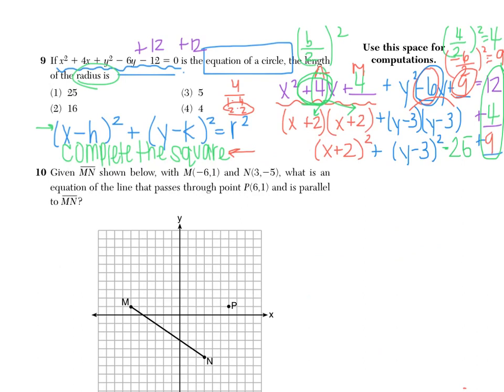So now because they're asking me for the radius, I know that 25 is R squared. So R squared, radius squared is 25. That means to get R by itself, I have to square root. So now my radius is 5, choice 3.